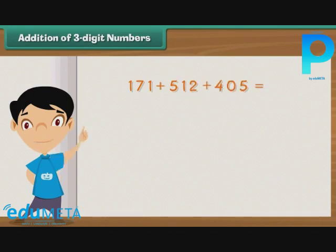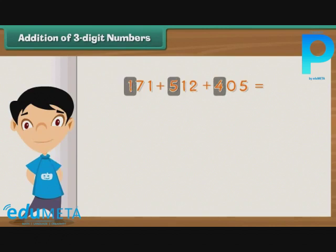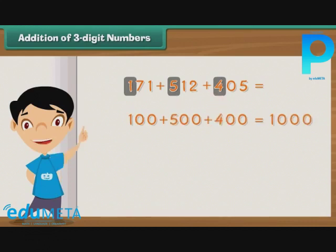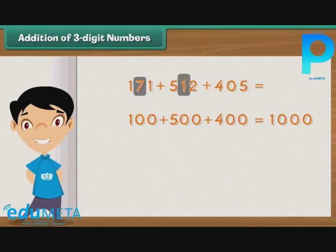To simplify the addition, we proceed according to place values. Let us begin with the digits at the hundreds place, that is, 1, 5 and 4. We add 100, 500 and 400. The sum is 1000. Now we proceed to add the digits at the tens place, that is, 7, 1 and 0. We add 70, 10 and 00 to get 80.